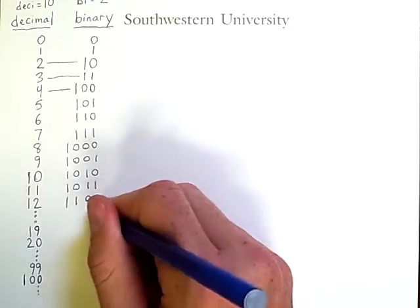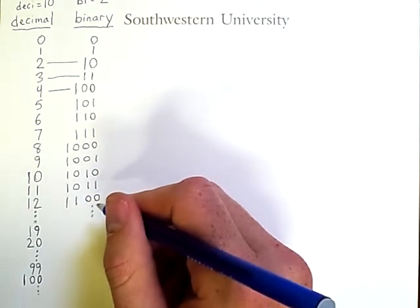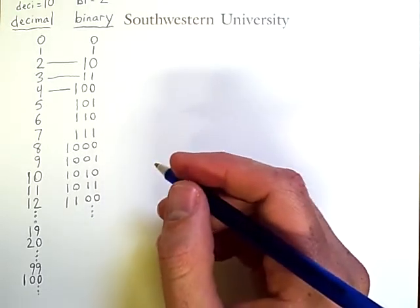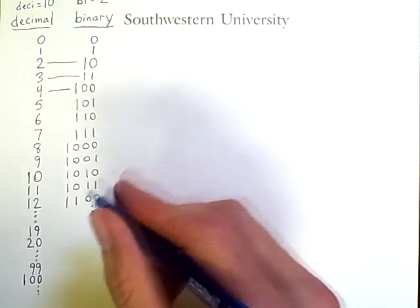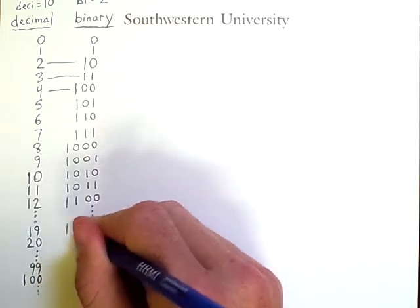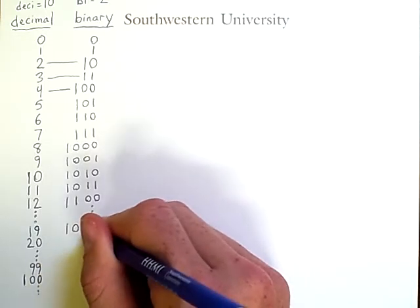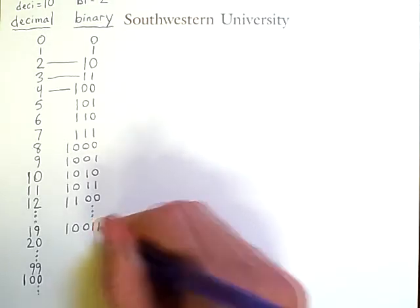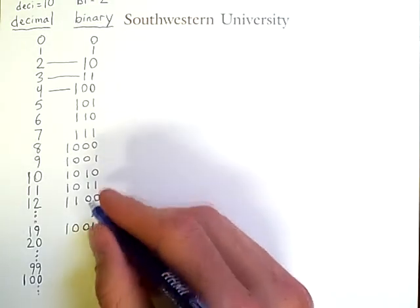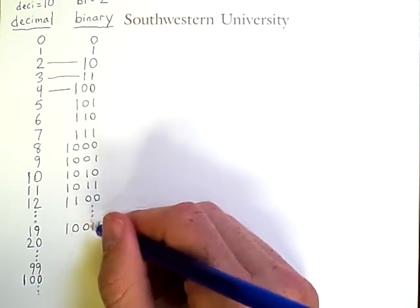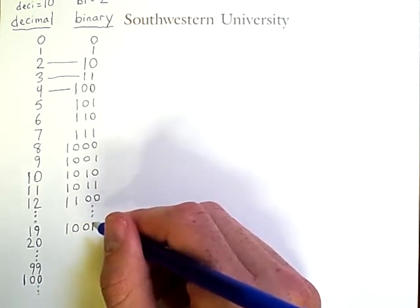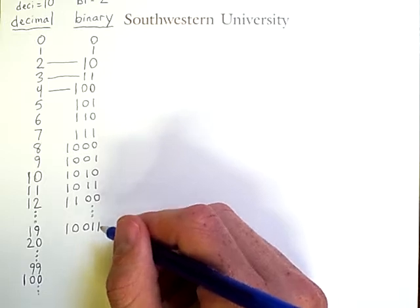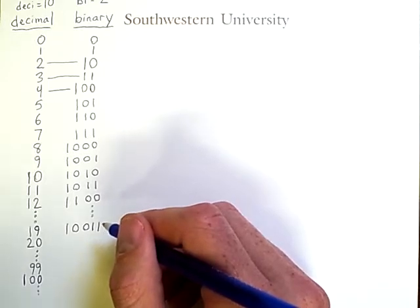Let's go ahead and skip ahead. And this may not be immediately obvious, but the binary representation of 19 is 1, 0, 0, 1, 1. Now, you could count to this number, but there is actually an easier way to convert between these two number systems, which we will explore more in a moment.